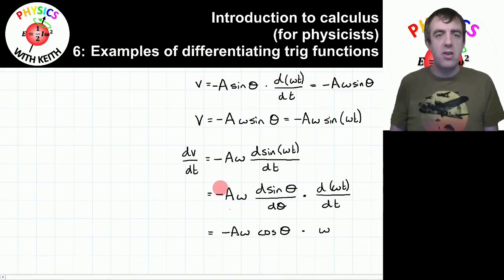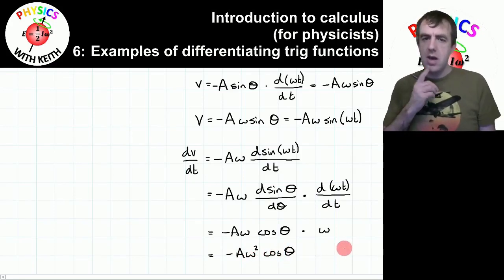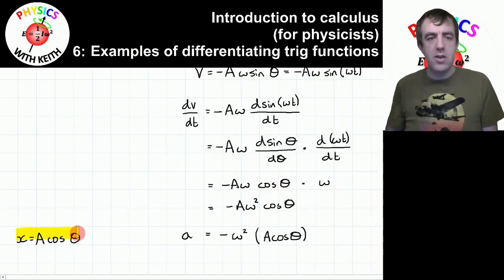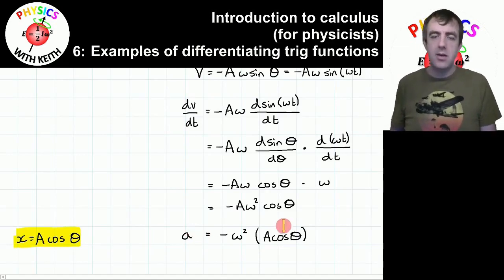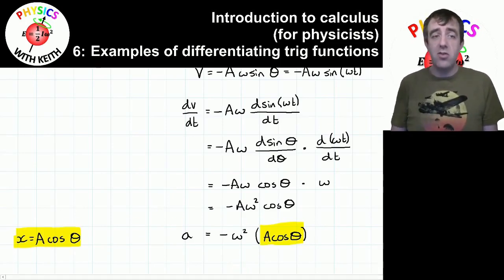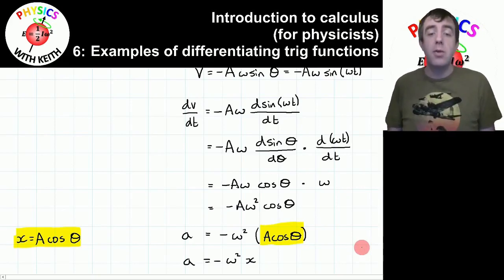Here's the expression, tidied up: minus A omega squared cosine theta. But A cosine theta had a different name — right at the start, we decided that displacement was varying cosinusoidally, so x equals A cosine theta. Factoring out A cosine theta, and substituting, we're left with that expression: the definition of simple harmonic motion written as an equation, derived using calculus.